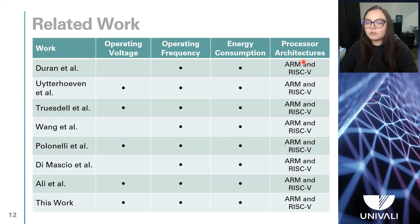This table shows the works that are related to this paper, as well as the metrics that relate to them. Every paper in this table approached the evaluation between ARM and RISC-V architectures, and all of them analyzed the operating frequency and the energy consumption, but only three of them, besides this work, discuss the operating voltage.